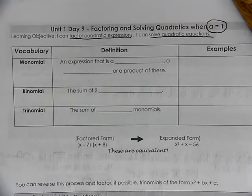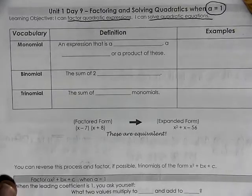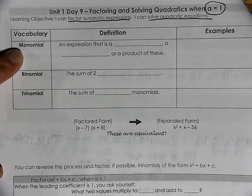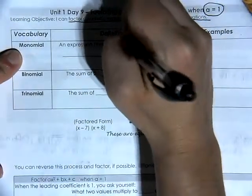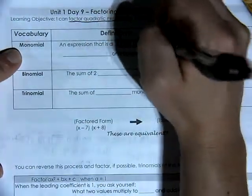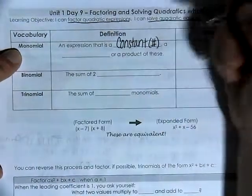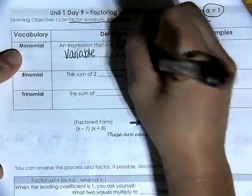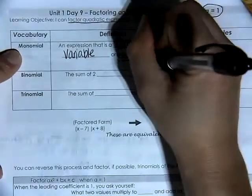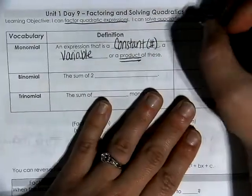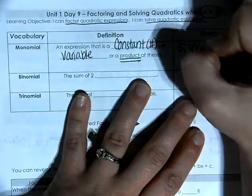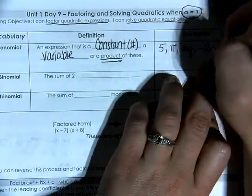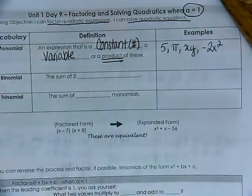Before we get started, let's go ahead and recall some vocabulary words that you learned in Algebra 1. The first vocabulary word is monomial. A monomial is an expression that is a constant — a constant is simply a number — or it is a variable, or it is a product of these. Examples of monomials would be the number 5, the number pi, the letters x and y, or the expression negative 2x squared.